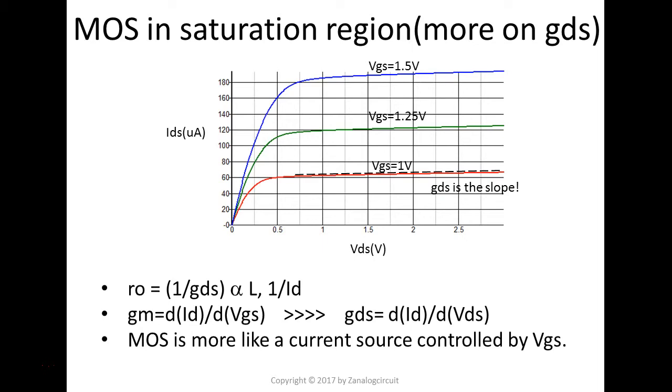RO is proportional to L. The longer the L, the higher the RO. And, also, it's inversely proportional to IDS. So, we have a higher IDS, RO drops.